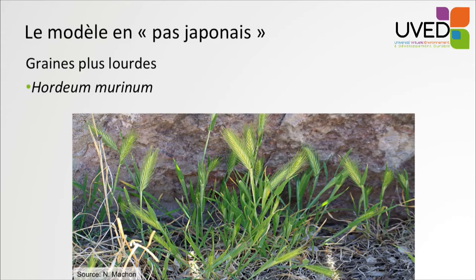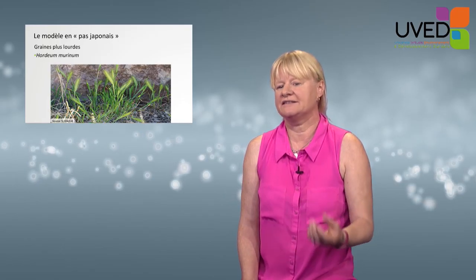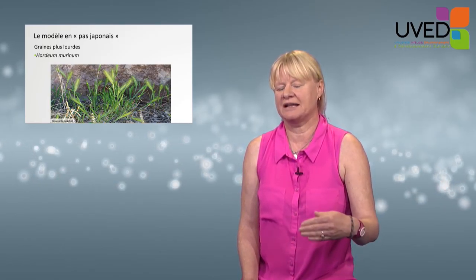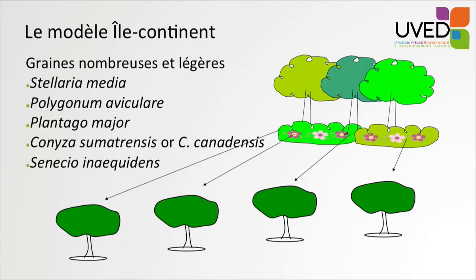The plants with the heaviest seeds, like the wild barley or the murinum, function according to the Japanese steppe model. Seeds are sent from one tree to the next year after year, and we see the species moving across town, jumping from one tree to the next. For the other species with lighter seeds, it's the continent-island model that is adopted. The Bercy station sends seeds to all the trees surrounding the station; therefore all the trees benefit from the seed shower in exactly the same way.